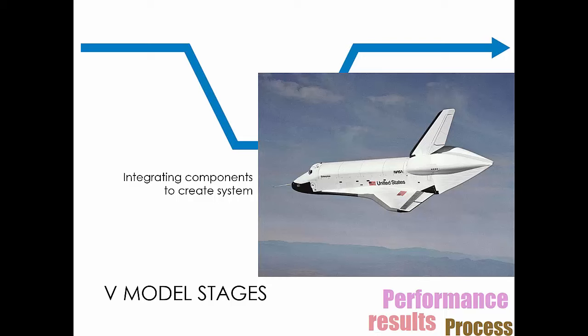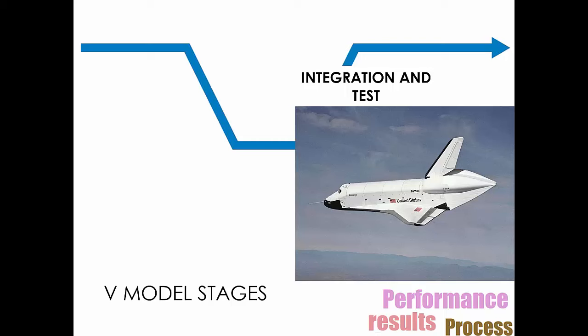So once they put it all together, they would want to test it. So what they did with the space shuttle is they actually flew it down 200 times to make sure it would work. And they made little improvements as they kept doing it. So this is called integration and test.